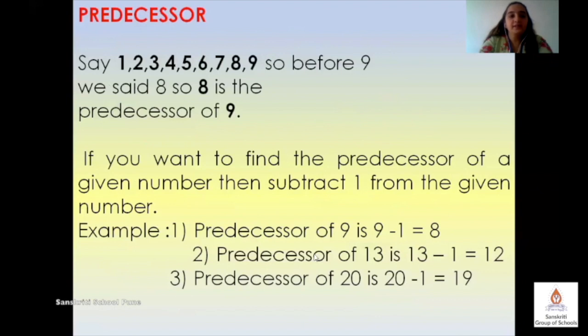Predecessor is the number that comes before a given number. Now here since 1 comes before 2, so 1 is the predecessor of number 2 and 2 is the predecessor of number 3 and so on. What will be the predecessor of number 9? Since 8 comes before 9, so 8 is the predecessor of number 9.